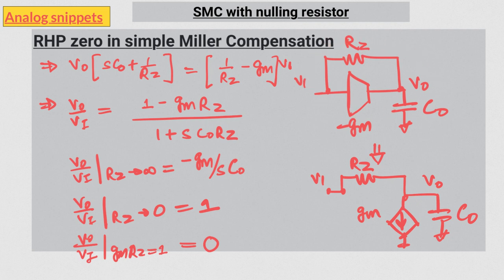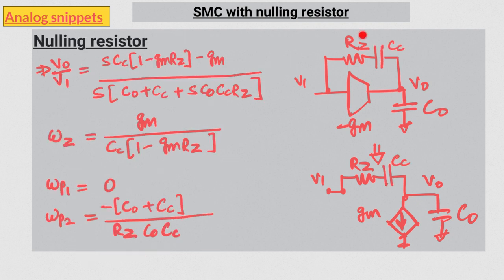Now let's add the Miller capacitor to this nulling resistor. After adding both the nulling resistor and the Miller capacitor, this is the transfer function we get, and we can notice a number of interesting things.